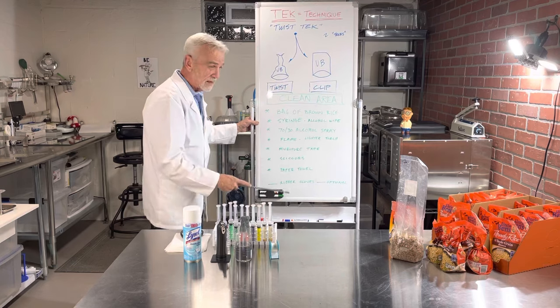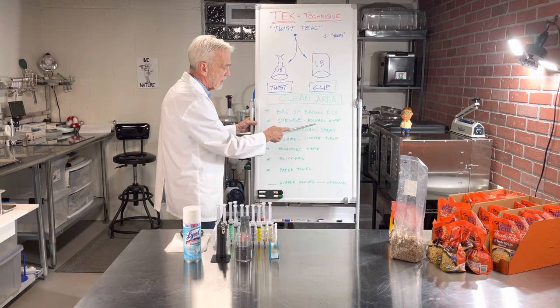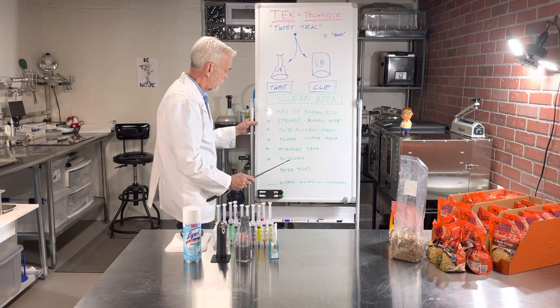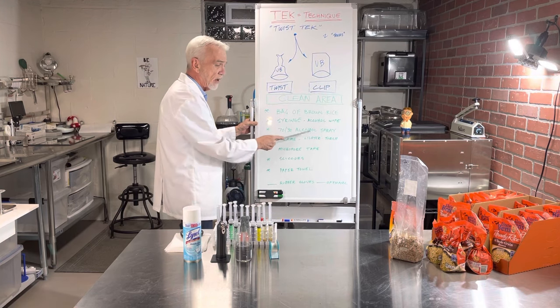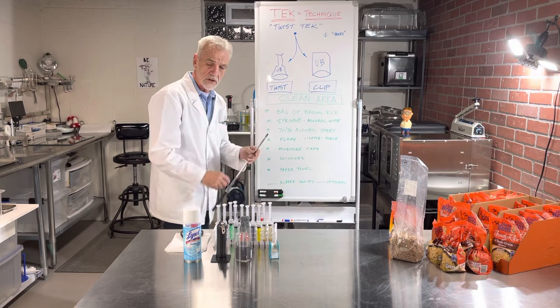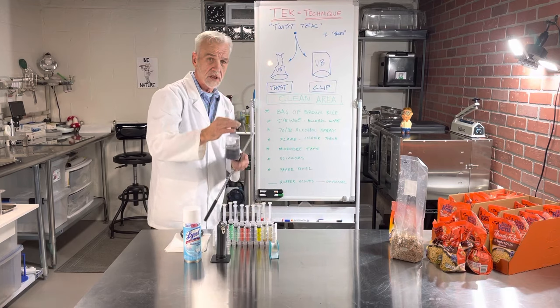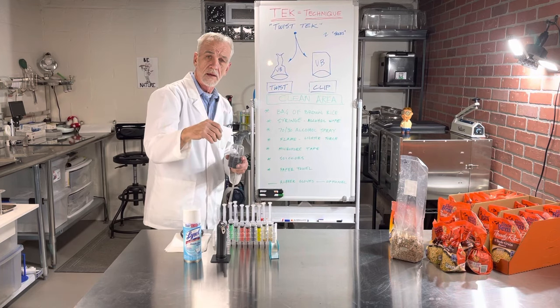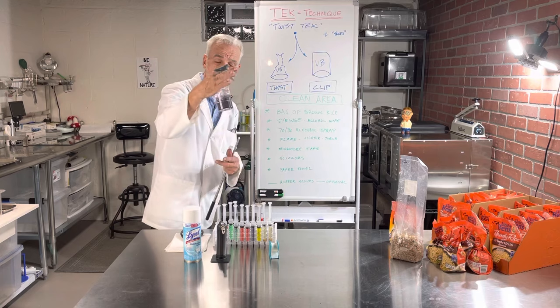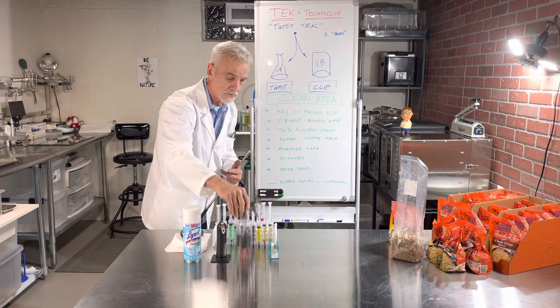What do we need next? We need a syringe. We need an alcohol wipe. We need 70-30 alcohol spray. 70-30, you'll just get the isopropyl alcohol at 70-30, it's already done. Just mix it up. It's already mixed for you.